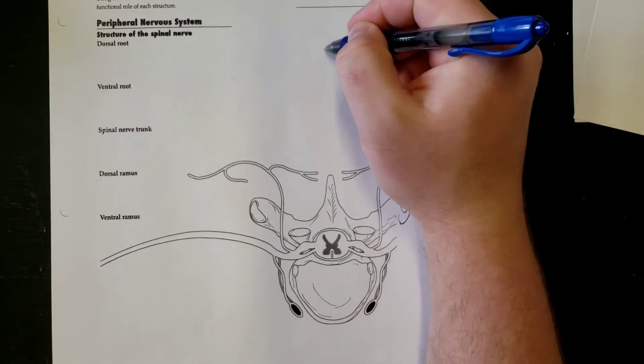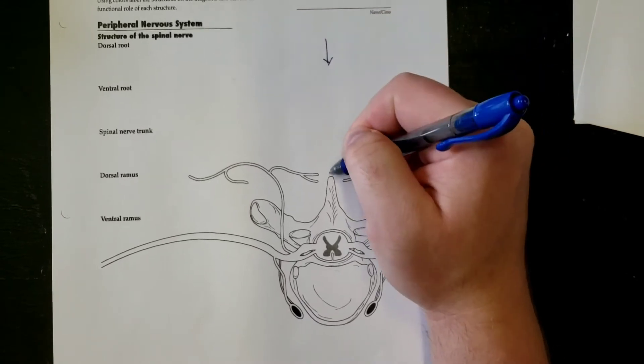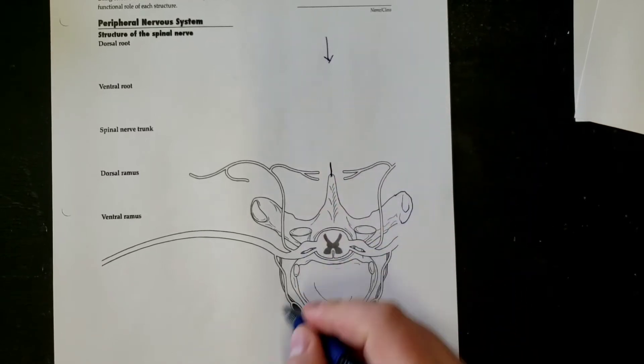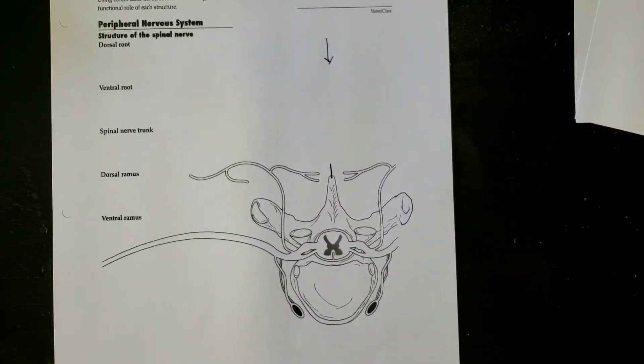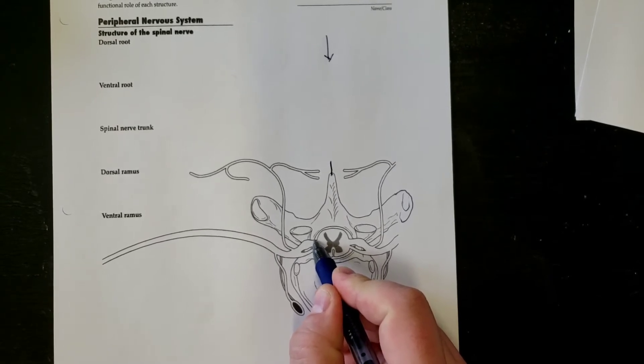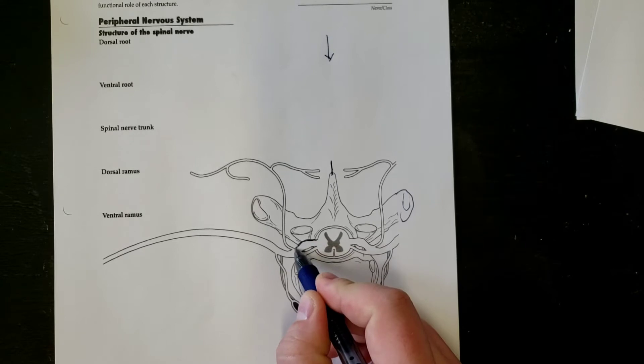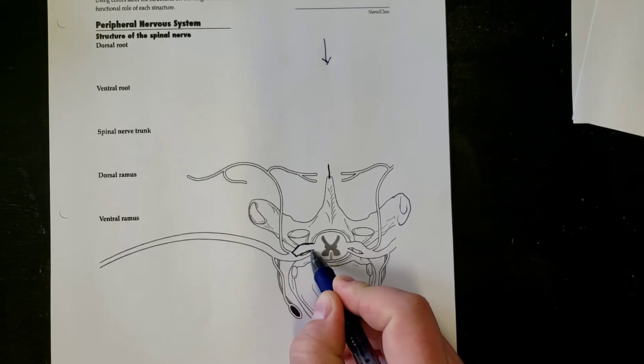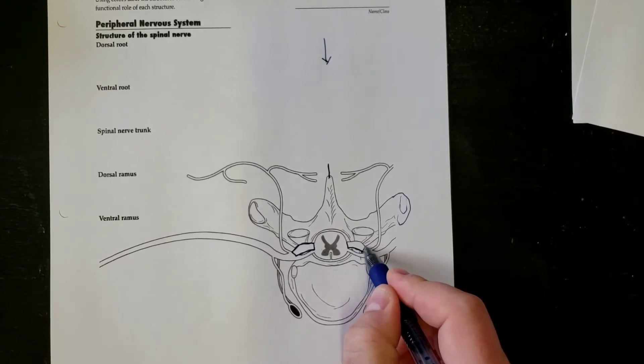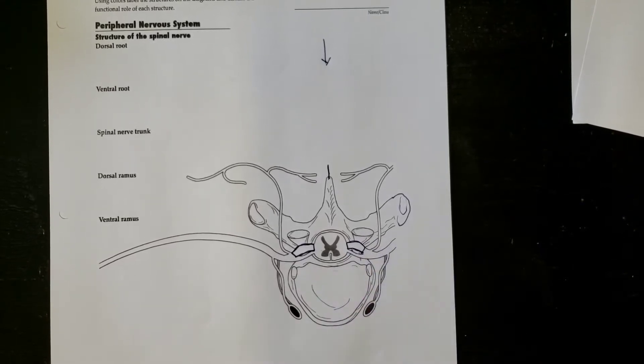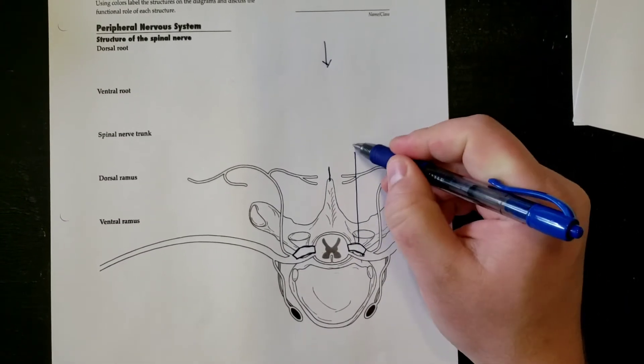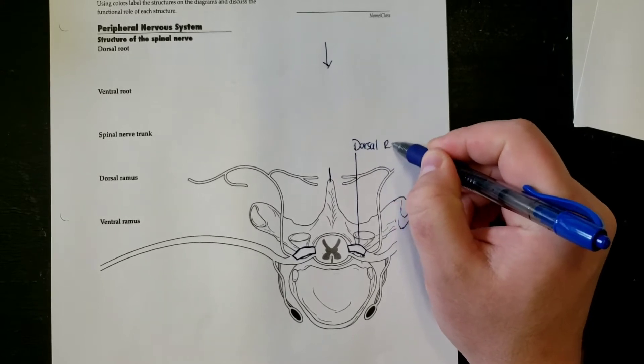Dorsal, we know, is going to be the posterior side, which would be this side because you have this spinous process here. So we're looking at this side here being your dorsal root. Sorry I don't have different colors, but I'll mark this here for you: dorsal root.